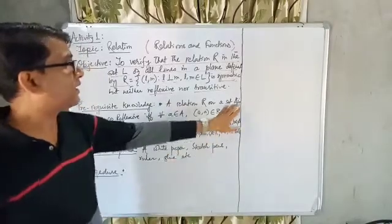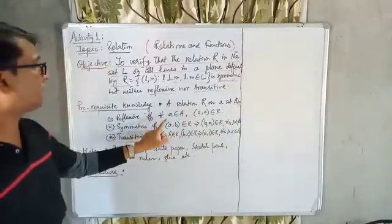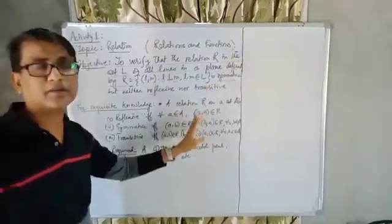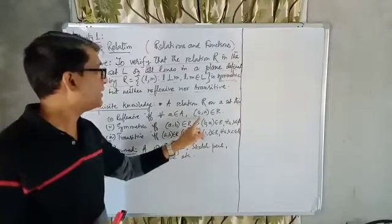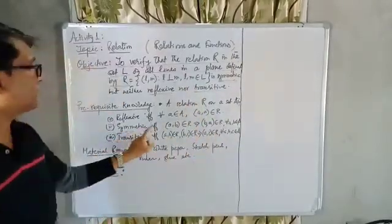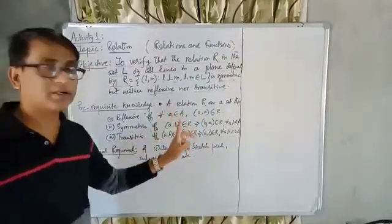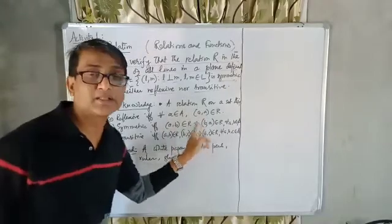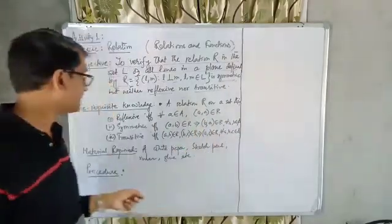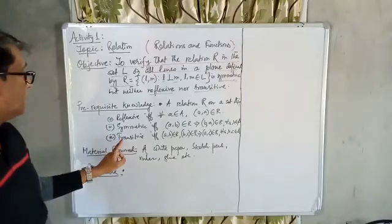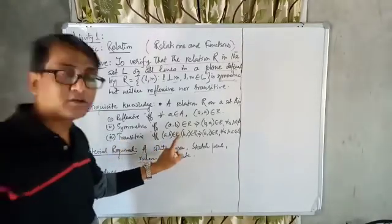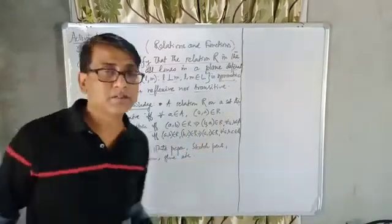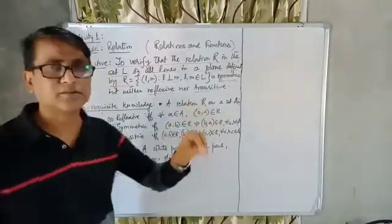The prerequisite knowledge: A relation R on set A is reflexive if and only if for all A in the set, (A, A) belongs to R — the element A is related to itself. It is symmetric if and only if (A, B) belongs to R implies (B, A) belongs to R. And for transitivity, if A is related to B and B is related to C, then A must be related to C.